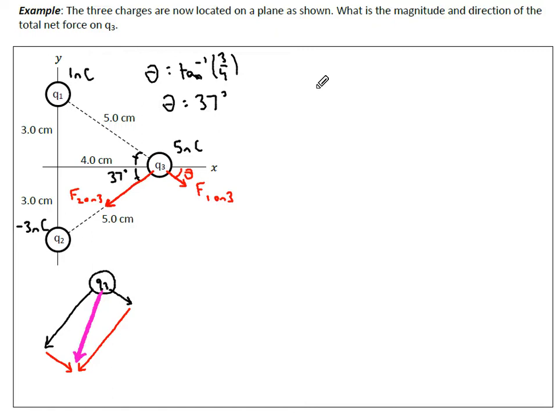Let's solve for our two values. We have F1 on 3. Right now I'm just looking at charge 1 and charge 3. I know F is equal to KQQ over R squared.